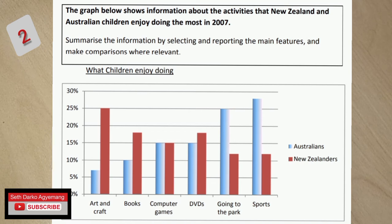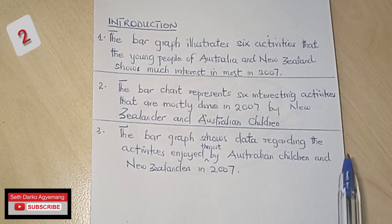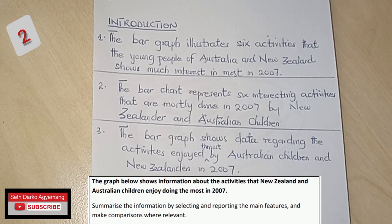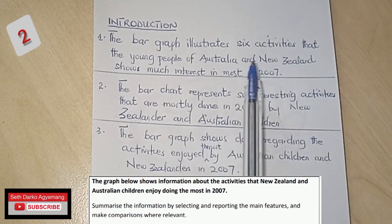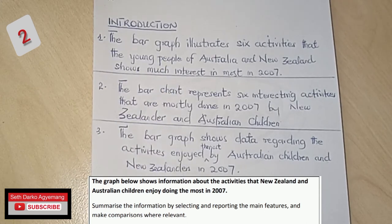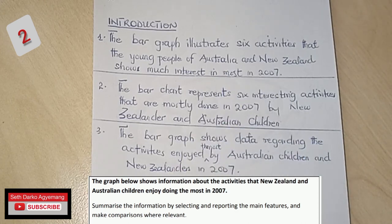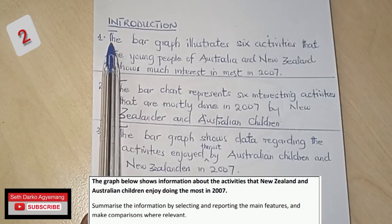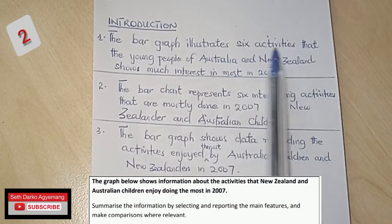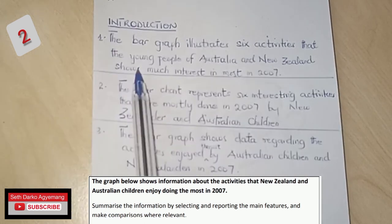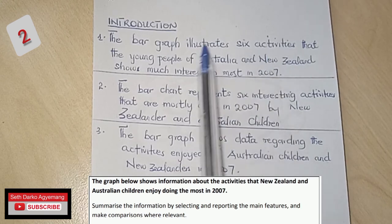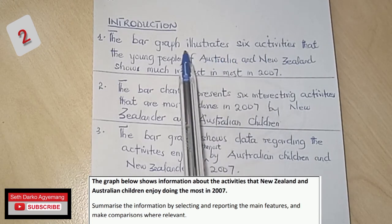To write the introduction, you have to paraphrase the question. You have to change most of the words. You can see I have about three different introductions here for the same question — they all use different English words. My first introduction is: 'The bar chart illustrates six activities that the young people of Australia and New Zealand show much interest in doing the most in 2007.' This is one format for writing the introduction.